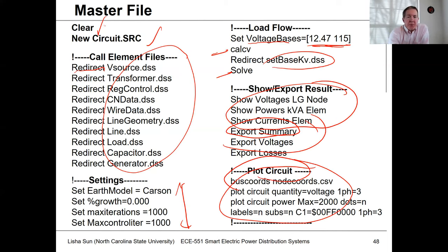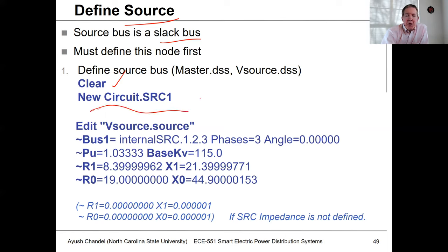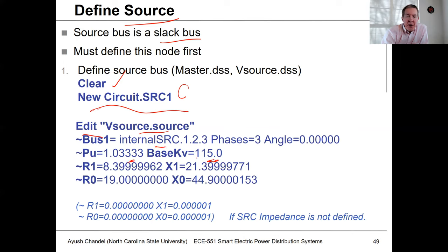Let's walk through the different things that get set up in this circuit. First, we need to get our source defined. The source is the slack bus for the circuit, sometimes referred to as the infinite bus. We clear the DSS memory out first, then define a new circuit called source one. Since that already has a default definition for the voltage source, we edit the source to declare the internal bus, the voltage, the base KV, and the internal impedances. All of this would be in the vSource.DSS file from the export.